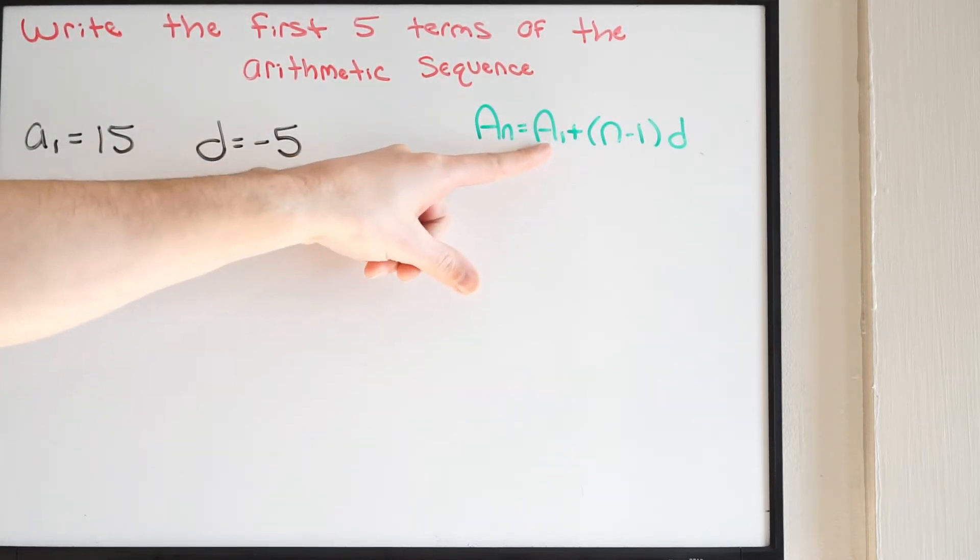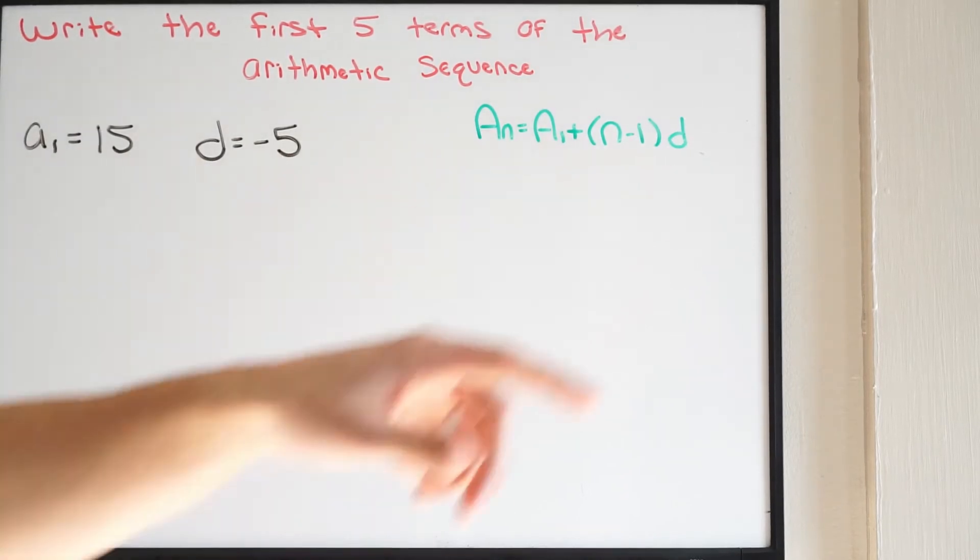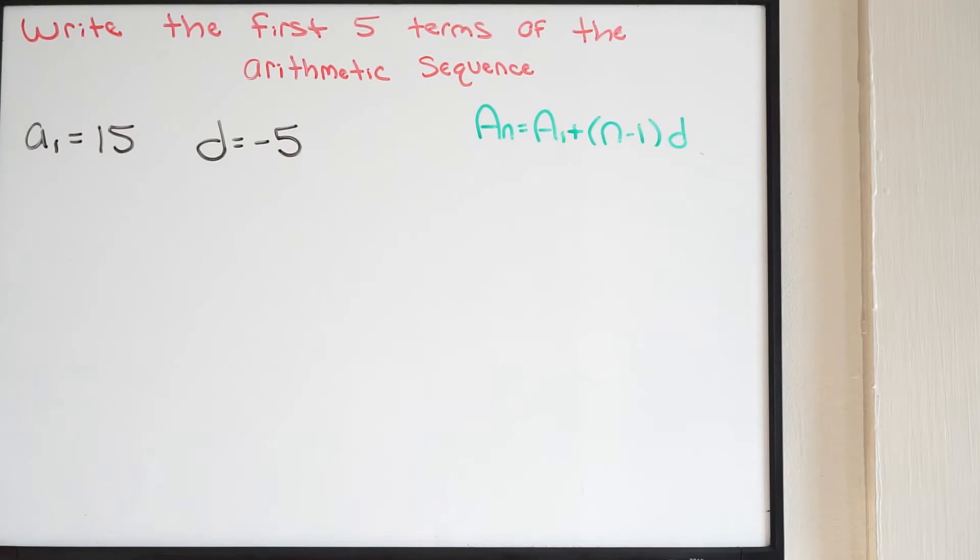Where A of 1, that's representing your first term of the sequence. N is going to represent the number of the term in the sequence. And D is representing your common difference between your terms.